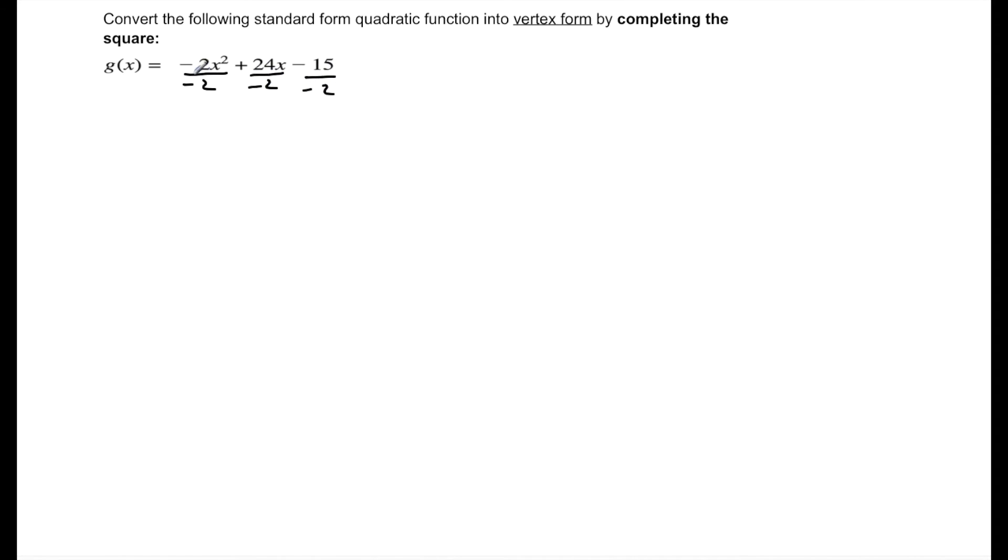And on the other side, so divide by whatever that first term is. G of x over negative two, that might seem a little weird but we're okay with it. We can deal with it. Right now just think of g of x as a term.